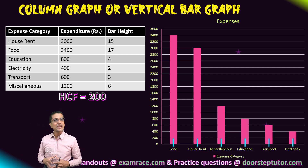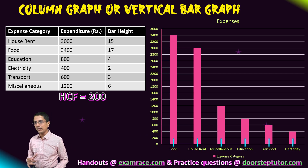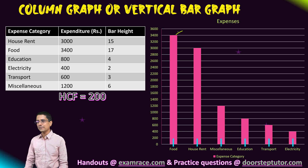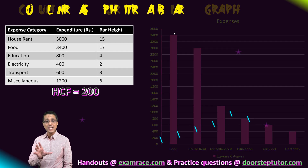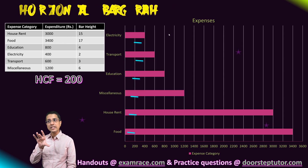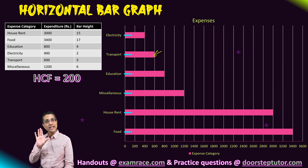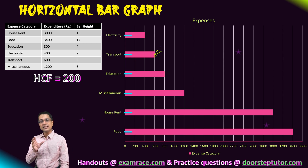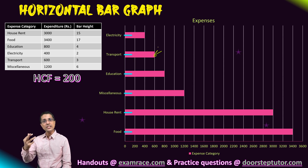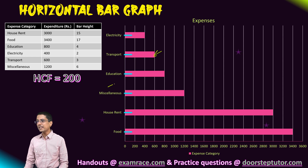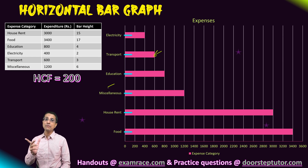The bar graphs that we have been drawing so far used vertical bars, but that is not necessary. Sometimes bar graphs can also use horizontal bars. The graphs are exactly equivalent — they depict the exact same information. The only thing which changes is that we interchange the x and y axis.